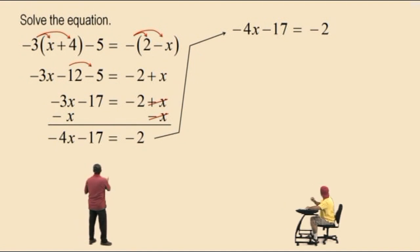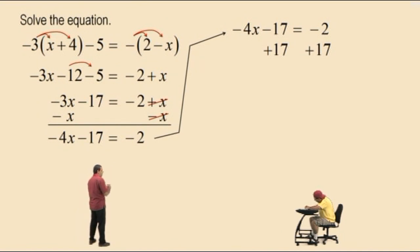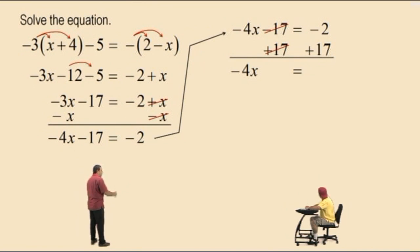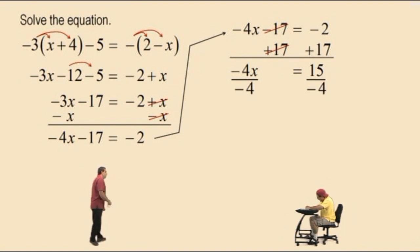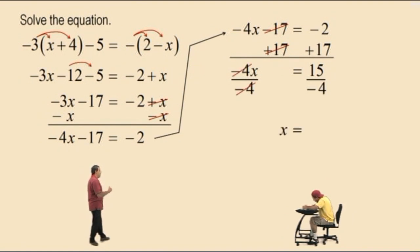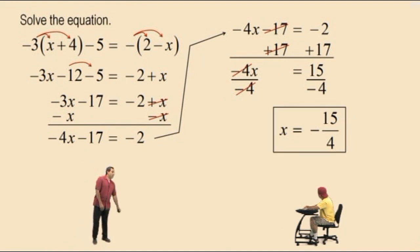Now, Charlie, we're trying to get the variables isolated on the left-hand side, so what do I need to do? Add 17. That's right. So those negative 17 plus 17 cancel, leaving you with negative 4x. Negative 2 plus 17 is what, Charlie? Fifteen. Fifteen. And finally, to get the positive 1x, we do what to both sides? Divide by negative 4. That's right. Divide by negative 4. Negative 4 divided by negative 4 is 1, and that's 1x. The right-hand side — a positive divided by negative is negative — so our answer is negative 15 fourths. So that completes Part 1.